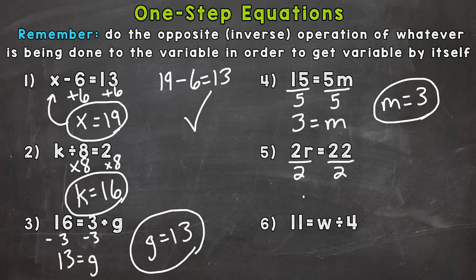That gives us r by itself. And 22 divided by 2 equals 11. So r equals 11. Let's double check. 2 times 11 does equal 22. So we're good to go there. Number 6.